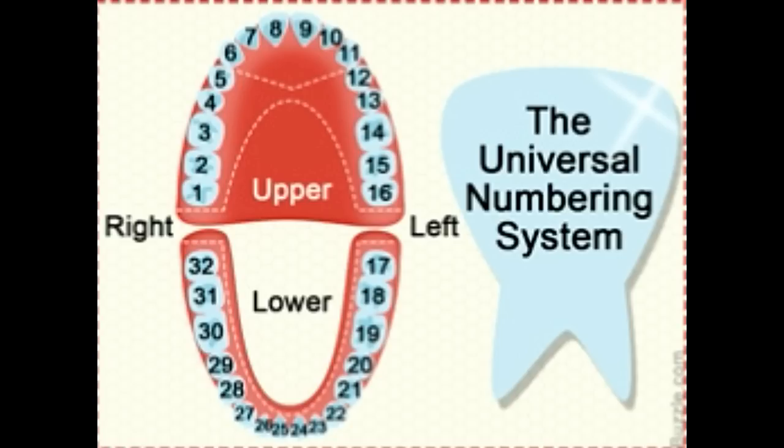Most adults have 32 teeth, which are referred to as permanent teeth. The first set of teeth that appear during childhood are referred to as primary or deciduous teeth. There are 20 primary teeth that erupt by the age of 6 months and are shed during childhood. Usually, the last primary tooth is shed by 11-12 years. By the time one reaches the age of 13, 28 of the 32 permanent teeth have erupted.